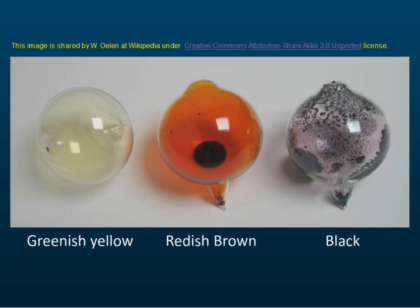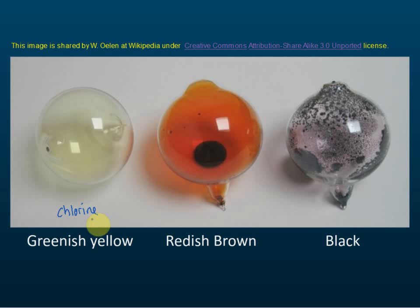All group 17 elements have color. You need to know the colors for chlorine, bromine, and iodine. This here is chlorine gas, and we can see that the color is greenish yellow.